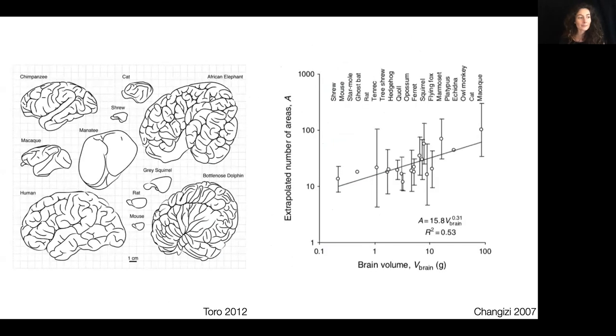If we look across many different species, the geometric and organizational complexity vary together. So the larger the brain, the more folded the brain will be, and also the more cortical areas we will have.